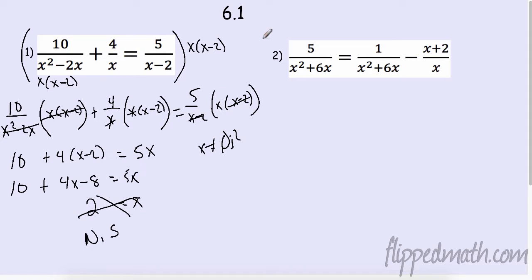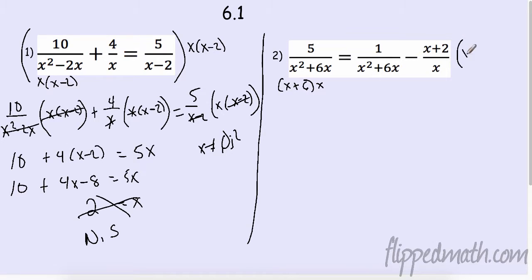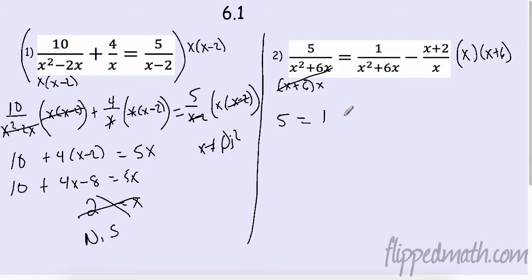Alright, let's come over here. In this case the factors are (x plus 6) times x, and (x plus 6) plus x, so my least common multiple is x and (x plus 6). I'm going to do it the short way. This whole thing cancels with this whole thing, so I have 5 left. Again, this whole thing cancels, so I have 1, minus (x plus 2).